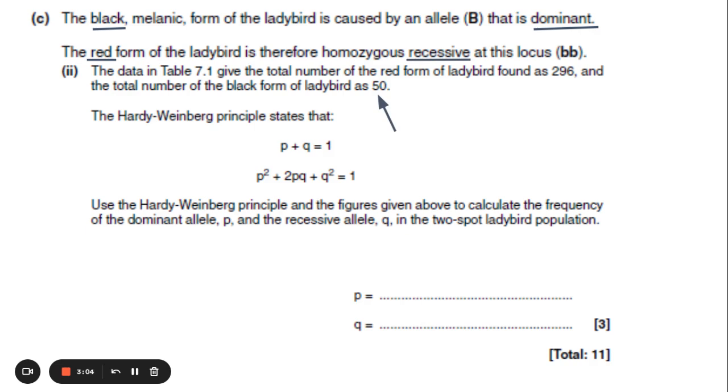It tells us here that we have 50 ladybirds that are the black form. Now don't forget black form is dominant, so this is your p squared and your 2pq. You do not know of those 50 which are heterozygous and which are homozygous dominant.